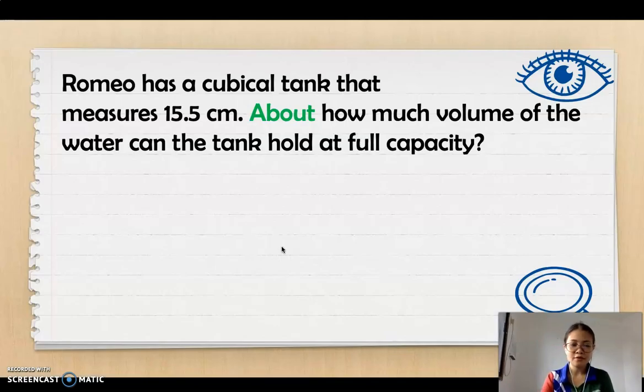Now, let's have a word problem involving estimating the volume. Romeo has a cubical tank that measures 15.5 centimeters. But how much volume of the water can the tank hold at full capacity? Now, the word about means estimation.